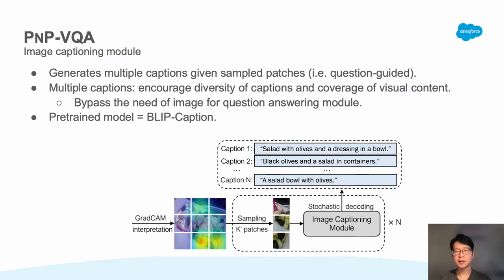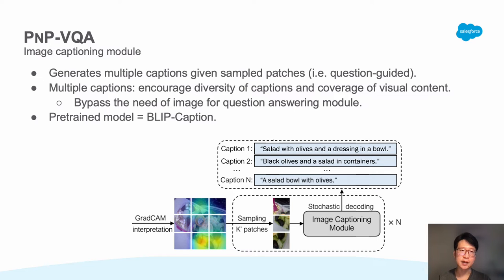Even with relevant image regions, there are still multiple ways to describe the region. Some descriptions could be useful for question answering whereas others may not. Therefore, given sampled patches based on GradCAM, we generate multiple captions through stochastic decoding. We denote the generated captions as question-guided captions. Having multiple captions encourages diversity of captions and coverage of visual information. Our design bypasses the need of image for the question answering module. We adopt a pre-trained model known as BLIP Caption.